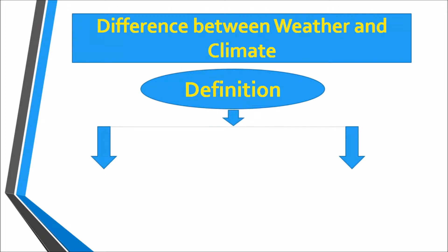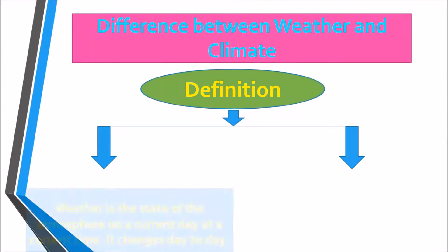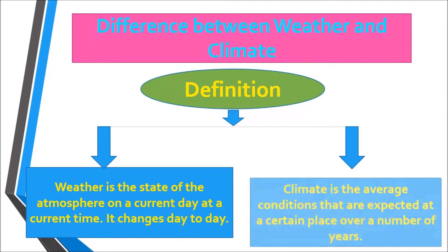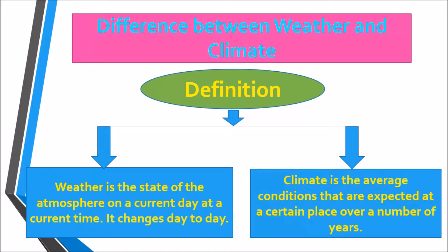First, we will look at the definitions of weather and climate. Weather is the state of the atmosphere on a current day at a current time — it changes day to day. Climate, on the other hand, is the average condition expected at a certain place over a number of years.